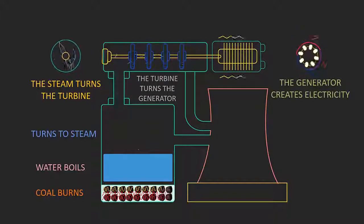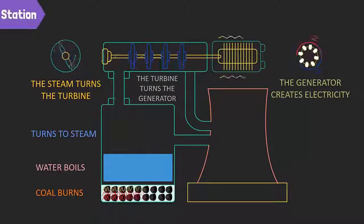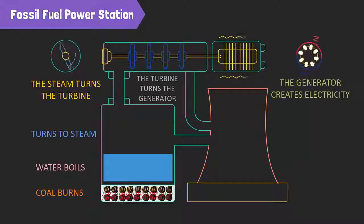Turbines like these are called steam turbines, since they rely on steam. So, this is how a fossil fuel power station generates electricity. Let's have a closer look at other sources and how they generate electricity.